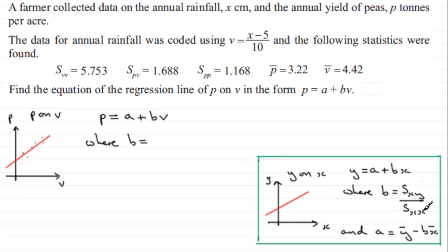Where b is going to equal, well it used to be sxy over sxx, but it's now going to be svp, or you could write it the other way round. Because I can see that that statistic is up here, so it's going to be spv. You get exactly the same result whether you did svp or spv, and then this is divided by, instead of sxx where we had x, it's now the v, so it's going to be svv.